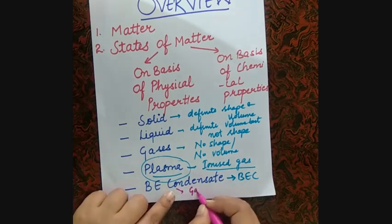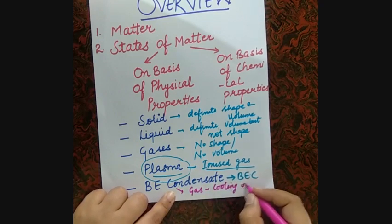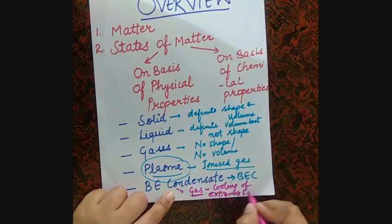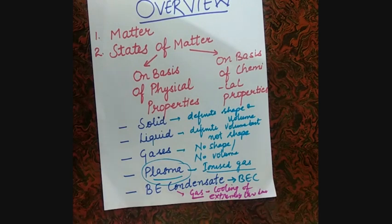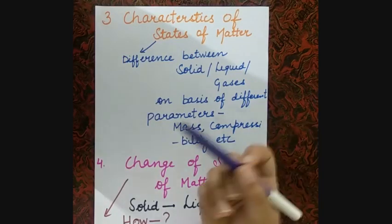BEC is formed by cooling a gas of extremely low density — a gas whose density is very low — to a super low temperature. So BEC is formed by cooling a gas with extremely low density to an extremely low temperature.